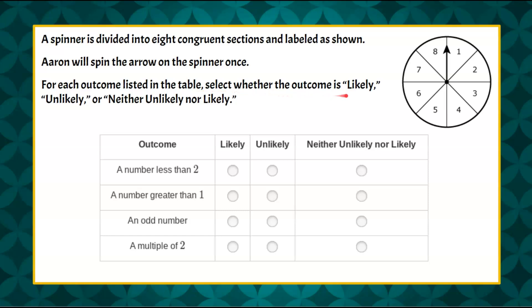For each outcome listed in the table, select whether the outcome is likely, unlikely, or neither unlikely nor likely, and you're given four outcomes to look for.